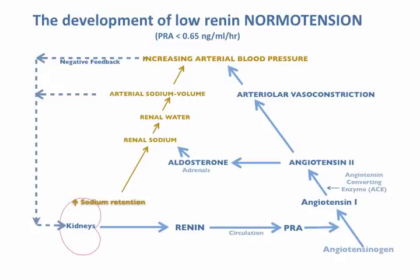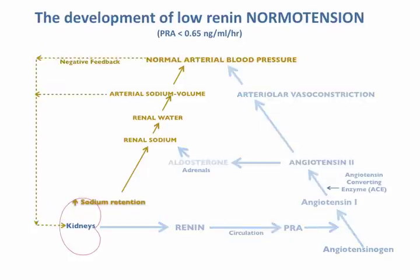Low renin normotension is a forerunner of low renin hypertension. The yellow inserts indicate that something has happened to make the kidneys retain more sodium than usual, causing an increase in arterial sodium volume. This would result in an increase in arterial blood pressure, but the increase in pressure exerts a negative feedback on the kidneys, causing renin secretion to fall. The fall in plasma renin activity leads to a fall in plasma angiotensin-2, which prevents blood pressure from rising over the long term. Thus, suppression of the activity of the renin-angiotensin system buffers the effect of any increase in extracellular fluid volume and prevents blood pressure from rising.